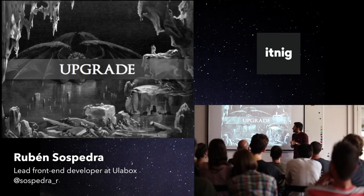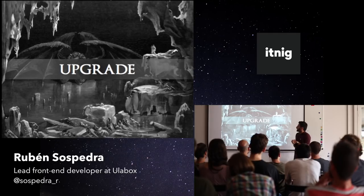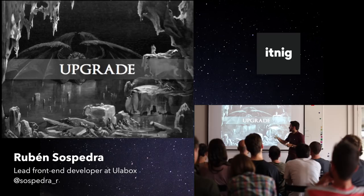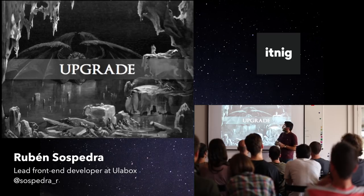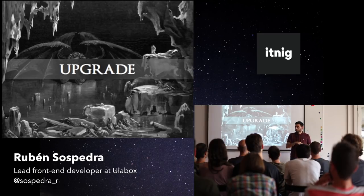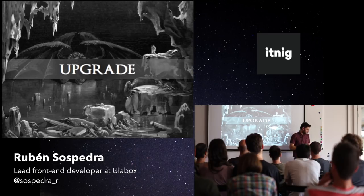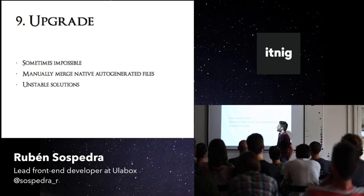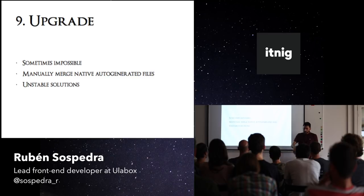Let's go to the last one. In Dante's story, at the very bottom of the Inferno, was Satan. That's the ninth circle. And here, the equivalent is: upgrade. The most painful thing with React Native is upgrading React Native itself — going from version 40 to 43, for example.